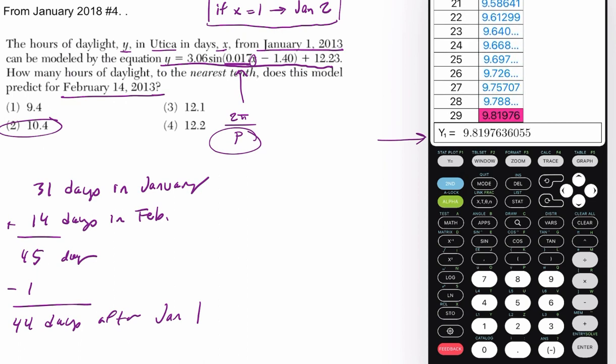So let's scroll down. Here's 44 days, 45. So if you missed that counting from January 1st, you would still get the same answer. But in this case, we're looking at 44 days after January 1st, and that's the output. All right.